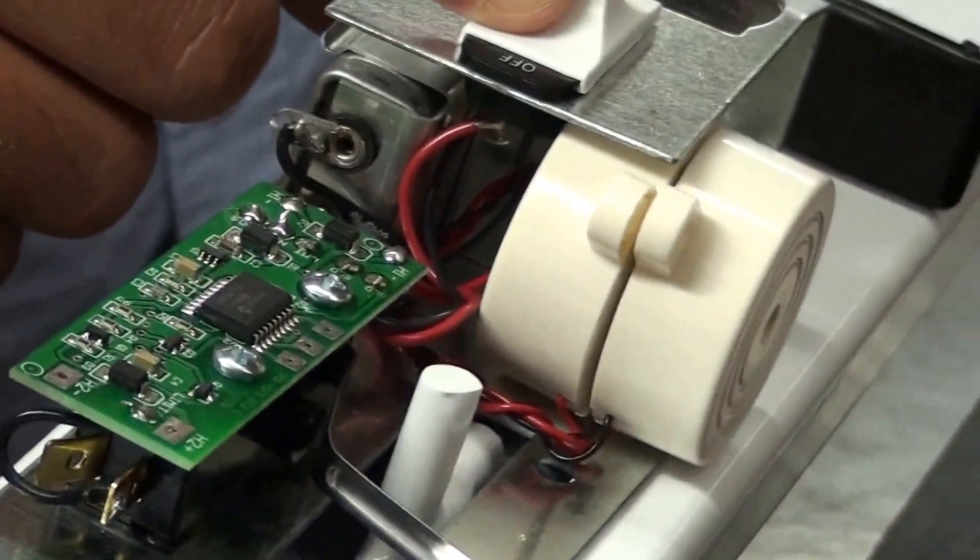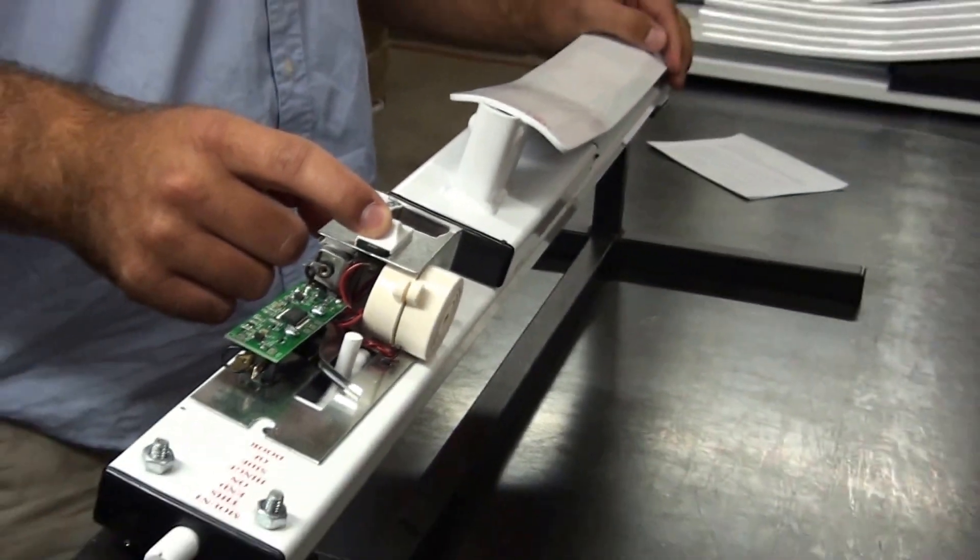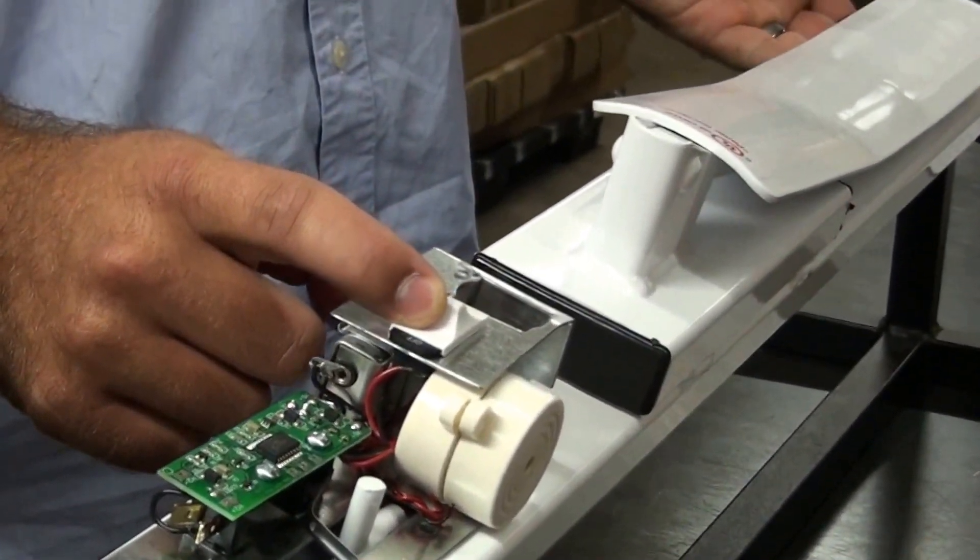Step 4. Once you have completed this, pull your paddle back to the locked position and look to see that the limit switch button is being pressed in.